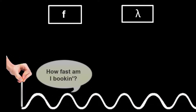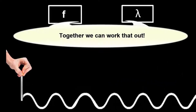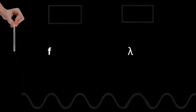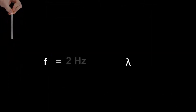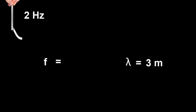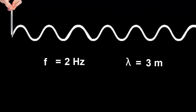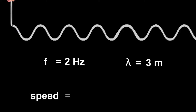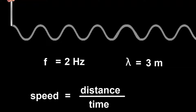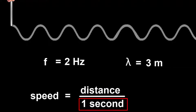We can use the frequency and wavelength to work out the speed of the wave. Here's how. Let's choose a wave with a two hertz frequency and a three meter wavelength. Speed means distance divided by time, so the easiest method is to see how far the wave travels in one second. Then the speed will be that distance per second.